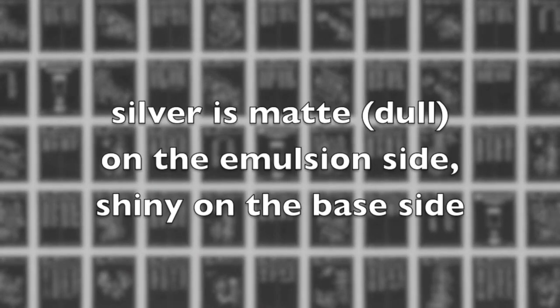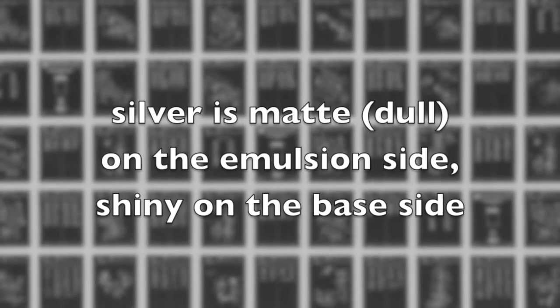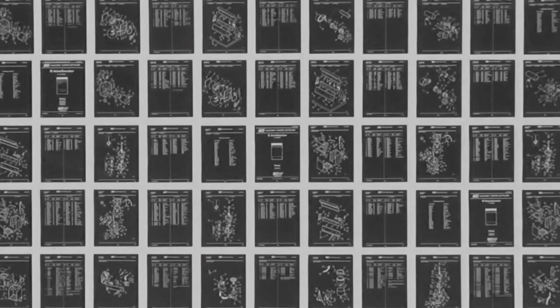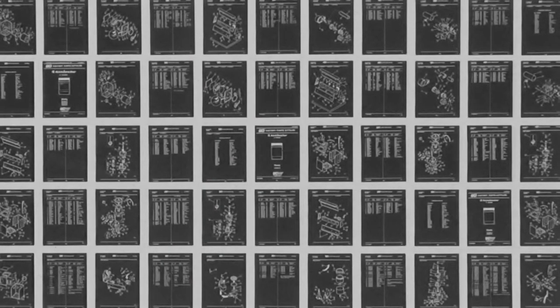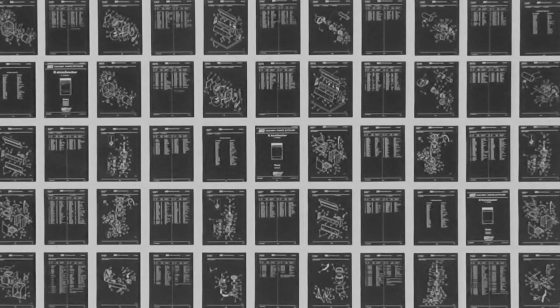While silver is matte on the emulsion side but shiny on the base side. Because the salt and dye is so light sensitive it fades over time even in the dark and is therefore unsuitable for preservation.